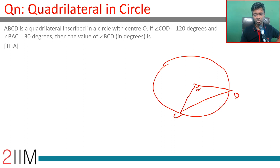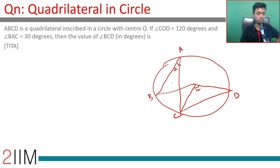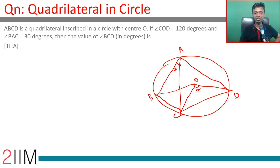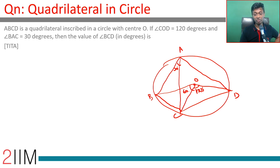Angle BAC is 30 degrees. This is the center O. Angle BAC is an inscribed angle on the segment, so angle BOC should be twice that, which is 60 degrees.